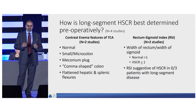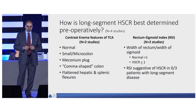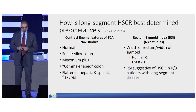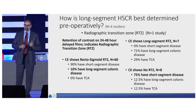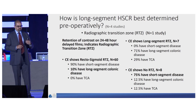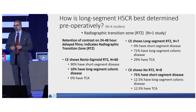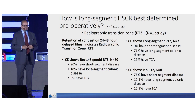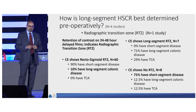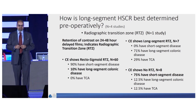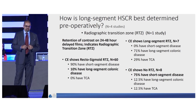The rectosigmoid index — normal is greater than one, so the rectum is bigger than the sigmoid in diameter. In Hirschsprung disease, it should be less than or equal to one. The rectosigmoid index was not suggestive of Hirschsprung disease in the two studies that addressed it. If a radiographic transition zone is not seen immediately, consider 24- or 48-hour delayed films. If the contrast enema shows a rectosigmoid transition zone, 90% of those patients will have short-segment disease but 10% will have long-segment. If the contrast enema shows a long-segment radiographic transition zone, all of them will have long-segment disease — 71% long-segment colonic and 29% total colonic. If the contrast enema shows no radiographic transition zone, 75% will have short-segment disease, 12% long-segment, and 12.5% total colonic aganglionosis.